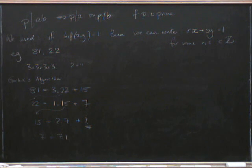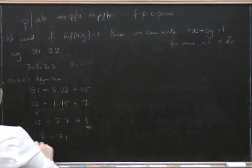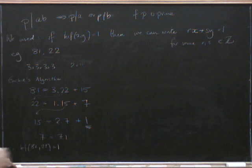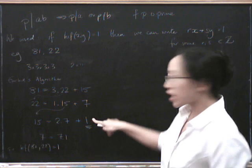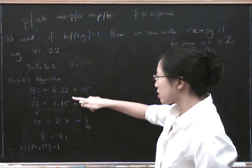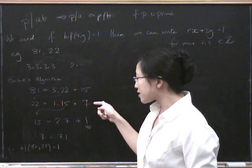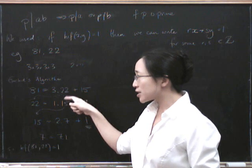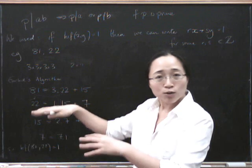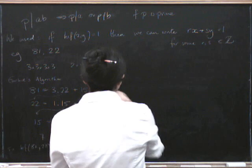And so Euclid's algorithm has shown us that 1 really is the highest common factor. So the highest common factor of 81 and 22 really is 1. Right. So now what we're going to do is we're going to run it backwards, feed the numbers back in again to get an expression of 1 in terms of 81s and 22s. So this line, the last line, we've got 1 in terms of 15s and 7s. This line is going to give us 7 in terms of 22s and 15s. And this line will give us 15 in terms of 81s and 22s. So if we sort of make that all trickle down, then we'll get 1 in terms of 81s and 22s. So let's just try it.